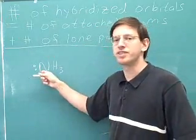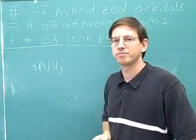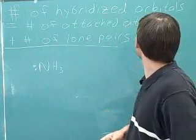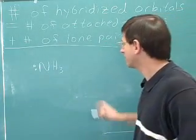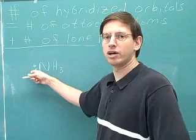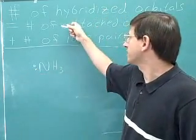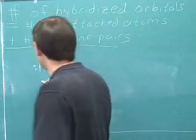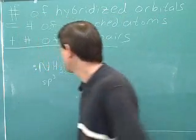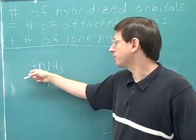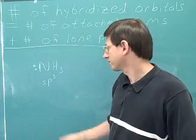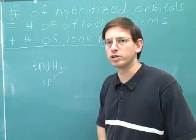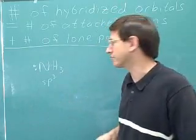Let's figure out the hybridization of this nitrogen. There are three attached atoms and one lone pair. Three plus one is four, so we have four hybridized orbitals — one s and three p — giving us sp3.